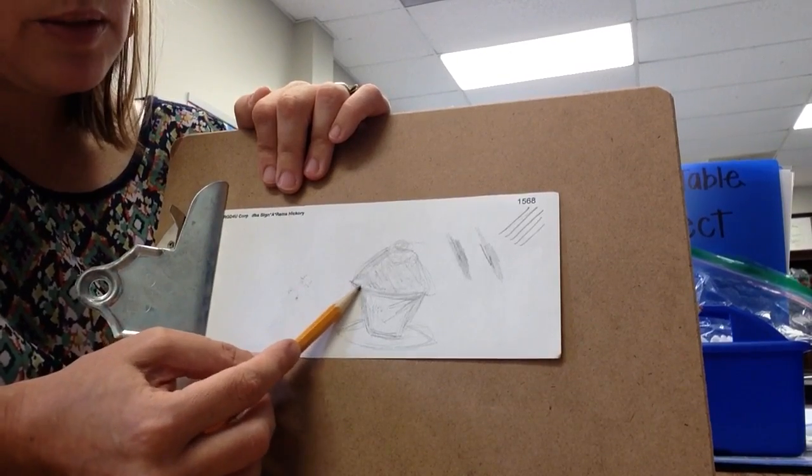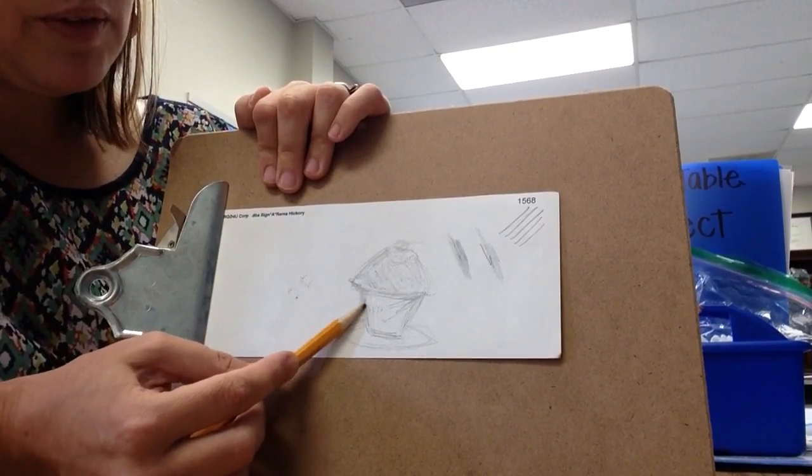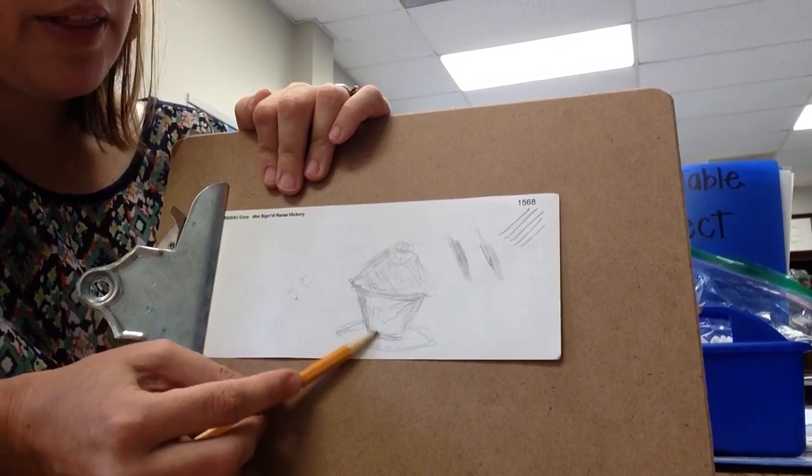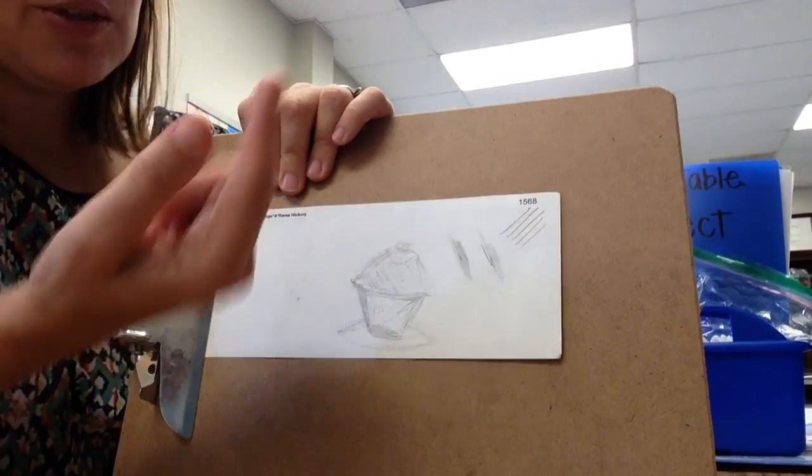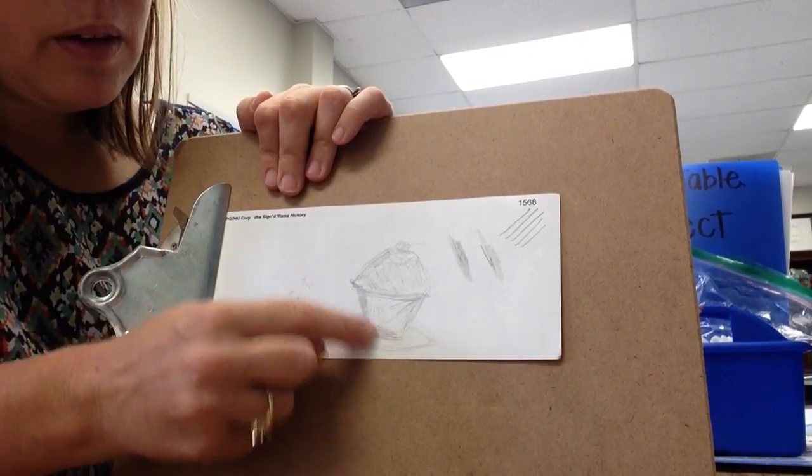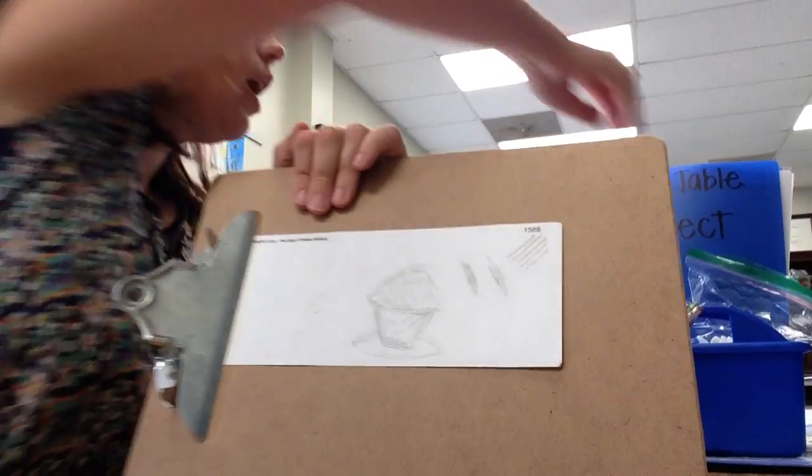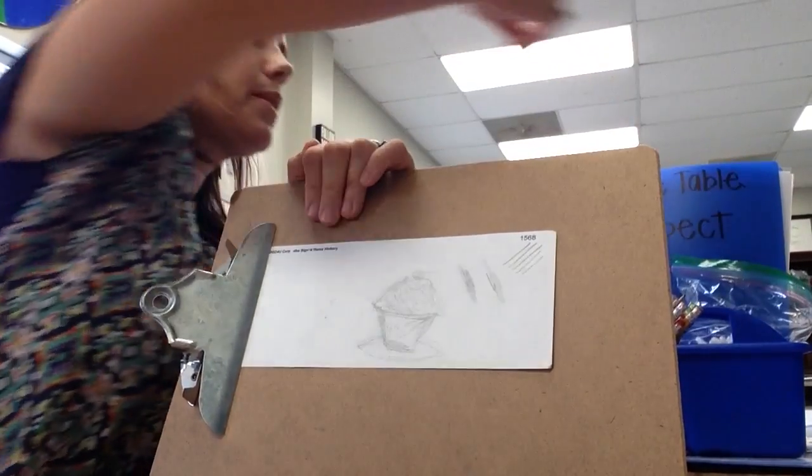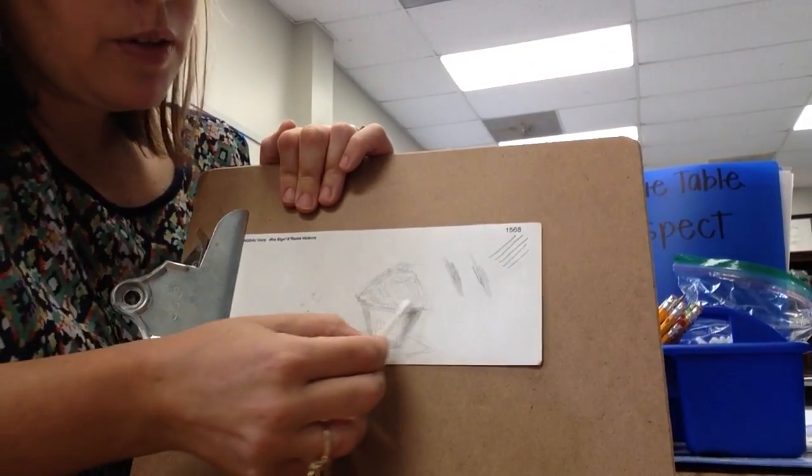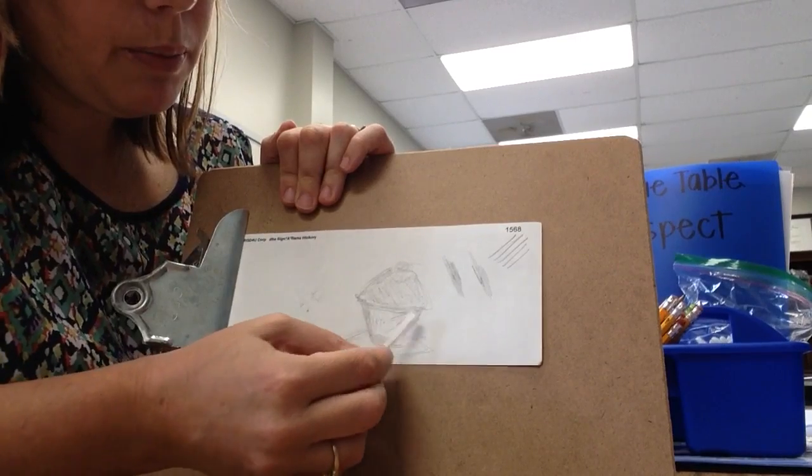Now this is something that you can practice on your practice paper before you move on to the final surface so that you are a master. Now there's some other techniques that you can use to blend. You can use your finger, but your finger might get really kind of dirty on your tables. I have these q-tips, so experiment on your practice paper.